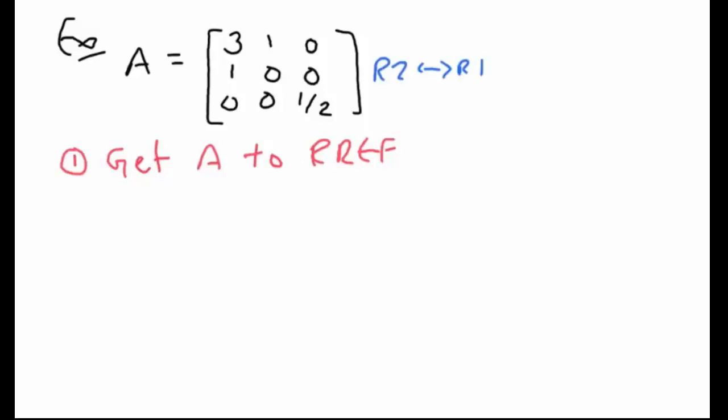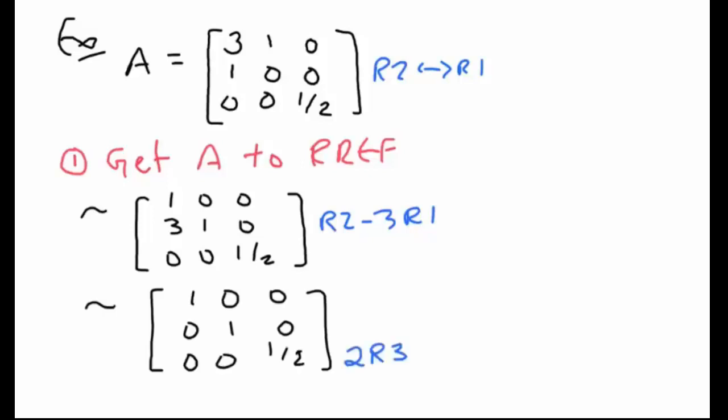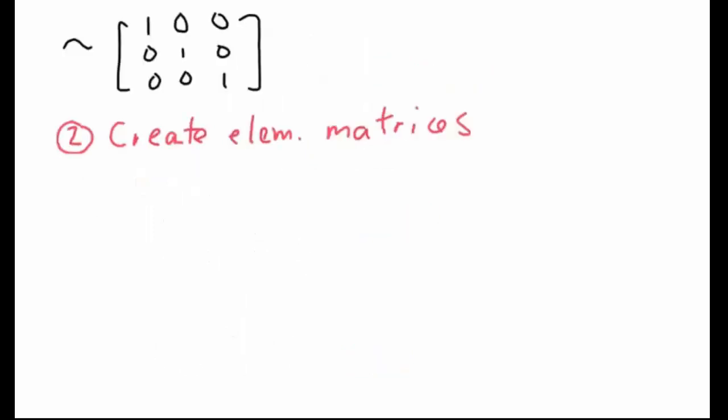First, switch row 2 and row 1. After you've done this, you have your first leading one, and we can go row 2 minus 3 row 1s. And our last step here to get to reduced row echelon form is to multiply row 3 by 2.